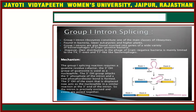The first type is Group 1 intron splicing ribozymes — one of the main classes of ribozymes. They are found in bacteria and lower eukaryotes. The Group 1 splicing ribozymes require a guanine residue cofactor, and a 3-hydroxyl group of guanosine for their mechanism.